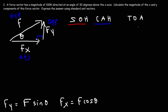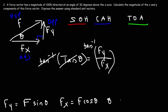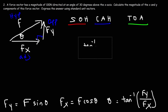For the TOA part: tangent theta equals opposite over adjacent, which is Fy over Fx. This formula is useful to calculate the angle. Taking the arctangent of both sides, the angle equals arctan(Fy/Fx). These are important formulas to write down, as they'll be very helpful when solving problems later in this video.